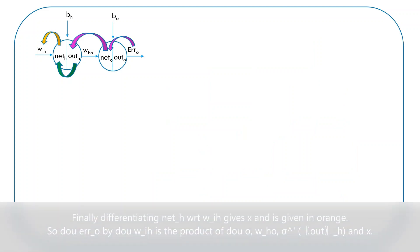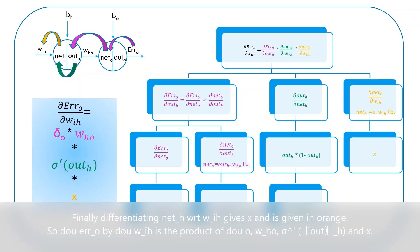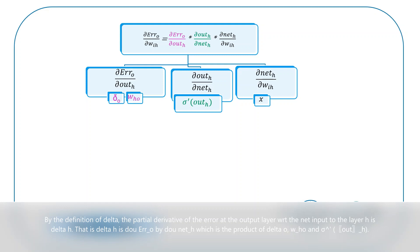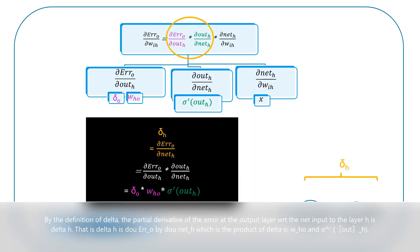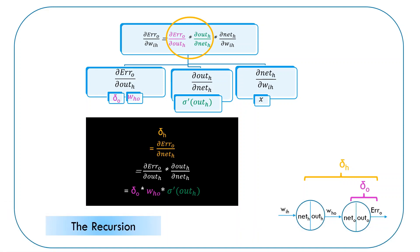Finally, differentiating netH with respect to WIH gives X, shown in orange. So, ∂errorO / ∂WIH is the product of delta O, WHO, sigma dash of outH, and X. By the definition of delta, the partial derivative of the error at the output layer with respect to the net input to layer H is delta H. Thus, delta H is ∂errorO / ∂netH, which is the product of delta O, WHO, and sigma dash of outH. Remember, we have written delta H in terms of delta O, which will help us generalize the backpropagation algorithm for multiple layers.